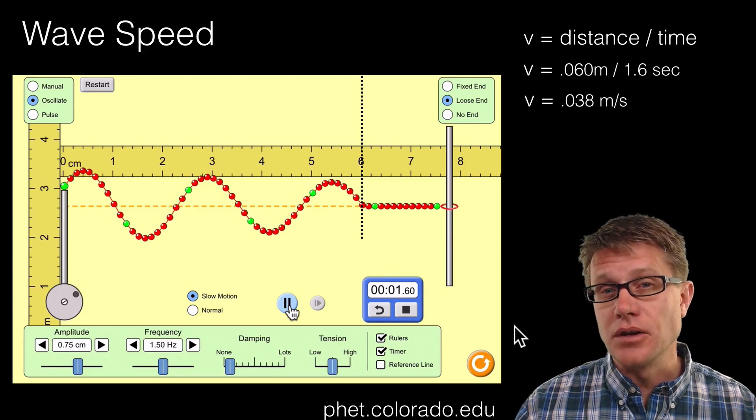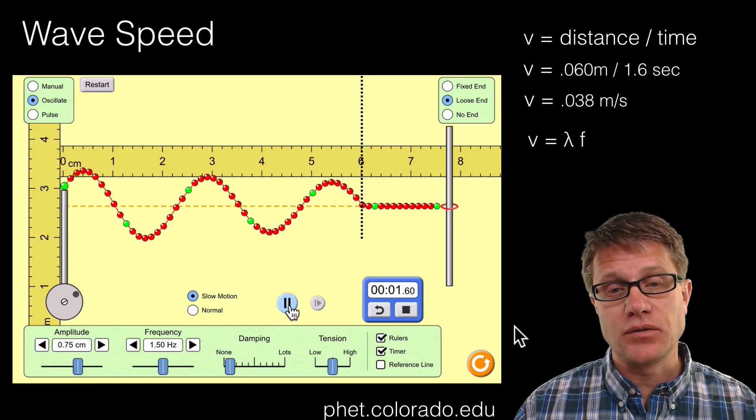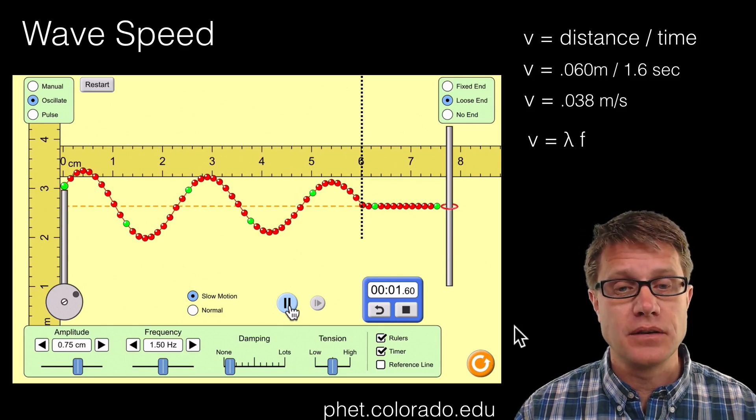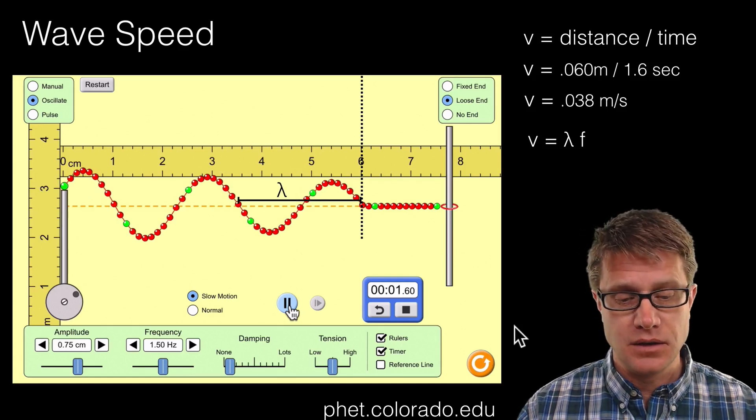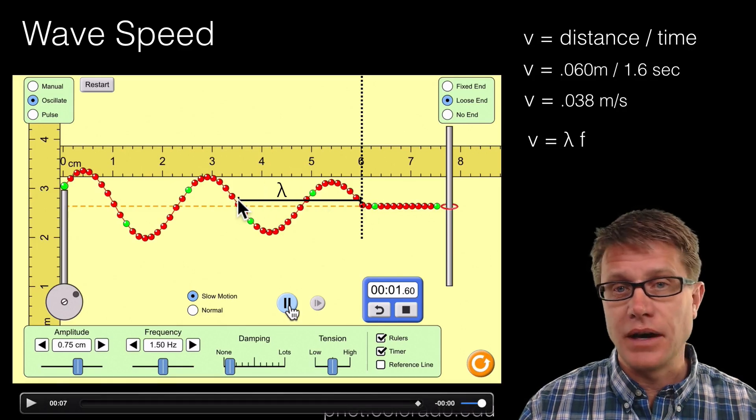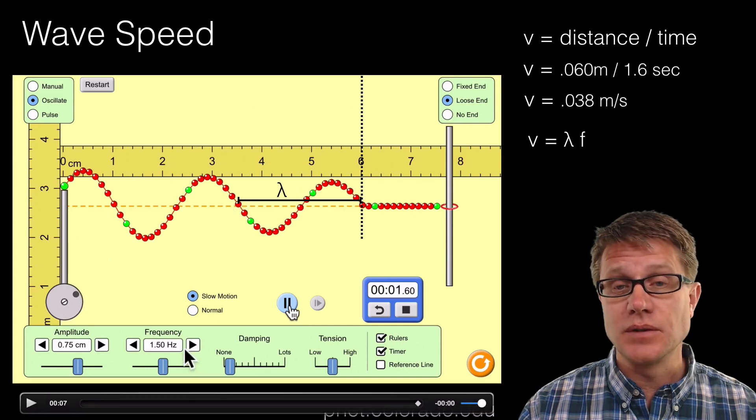Now we also know that you could calculate it in a different way. Velocity equals lambda times frequency. So we could calculate lambda. Lambda is going to be the wavelength. So let's figure out what the wavelength is. From here to here it is 1 to like 2.5 centimeters. And also on this simulation it is telling us what the frequency is.